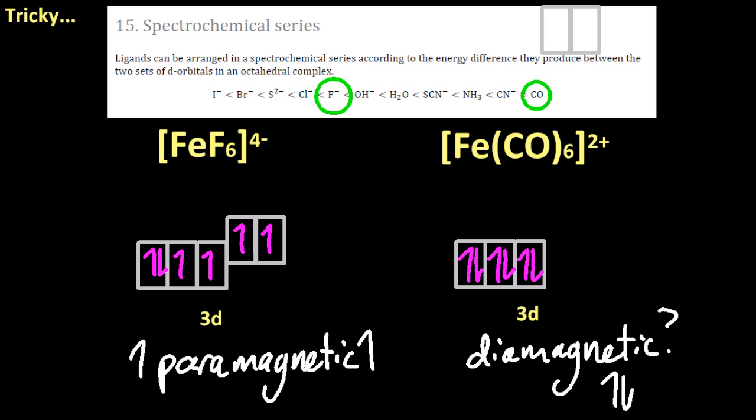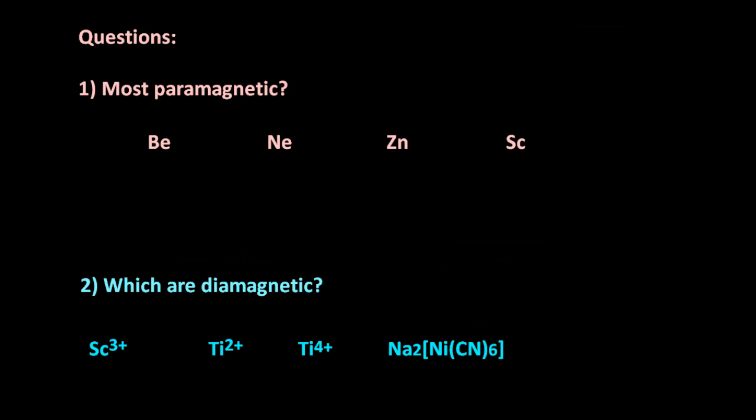And so actually, the one with the carbon monoxide ligand is diamagnetic because those single electrons go down and pair up with the other single electrons. Tricky, eh?